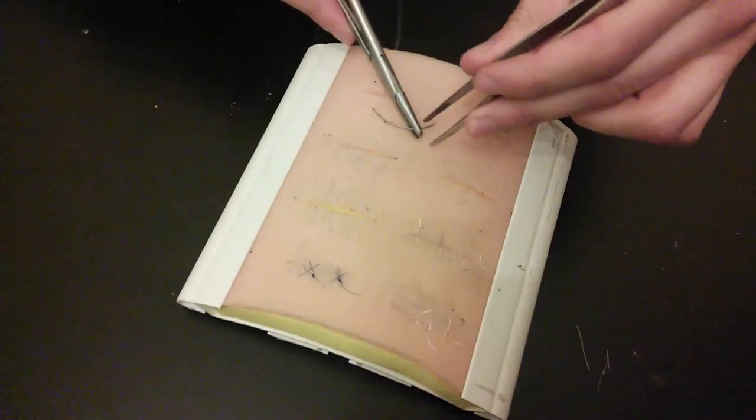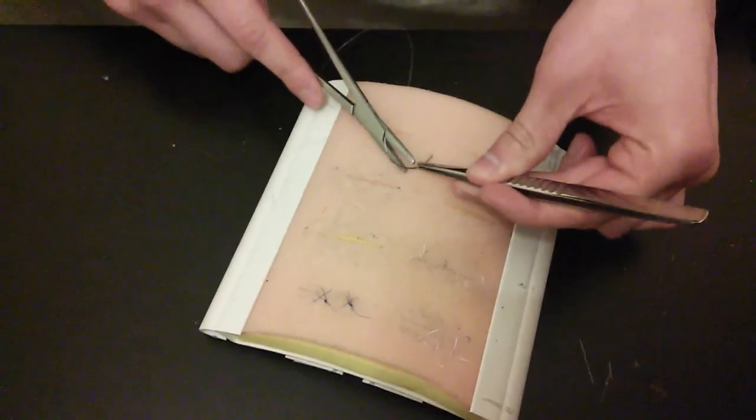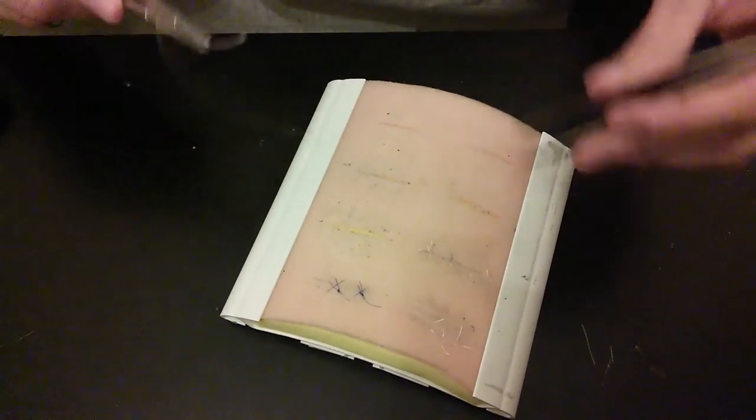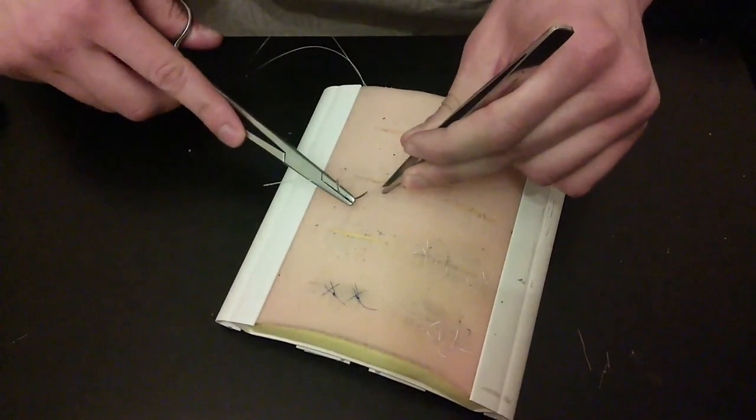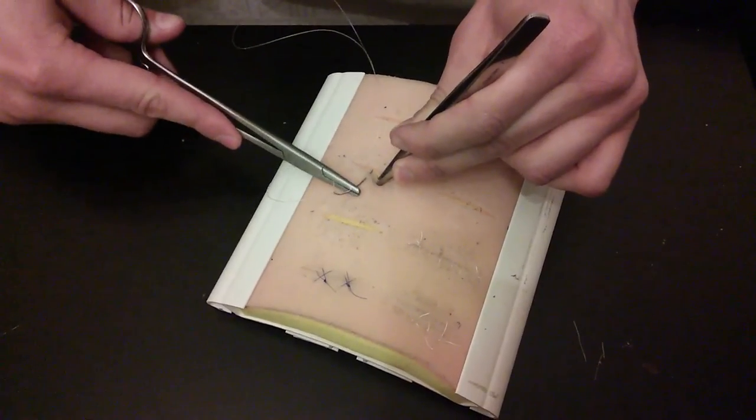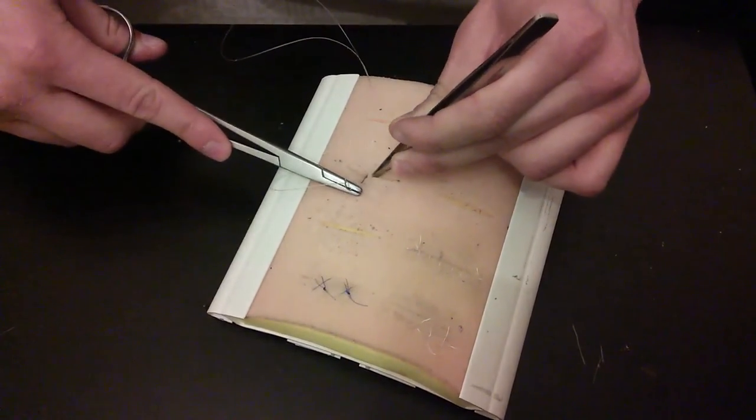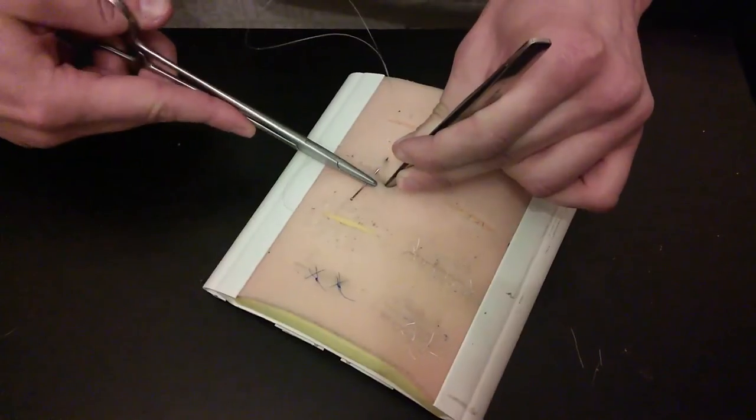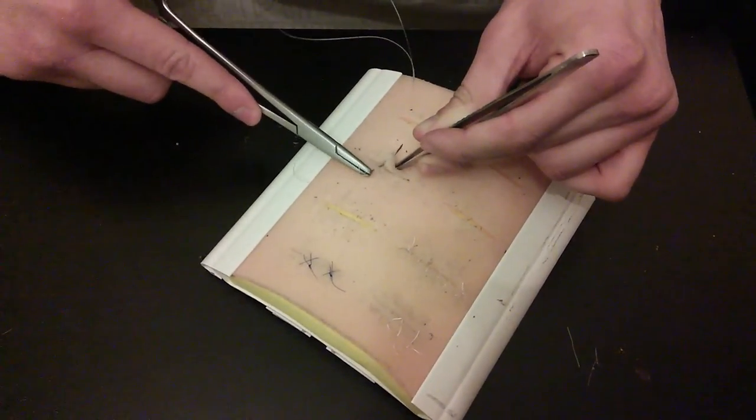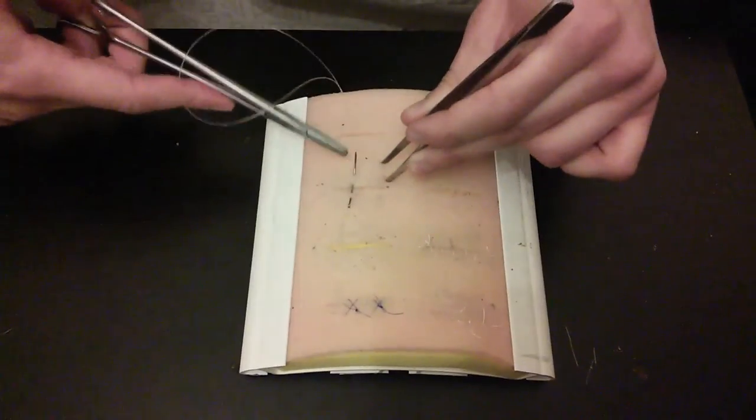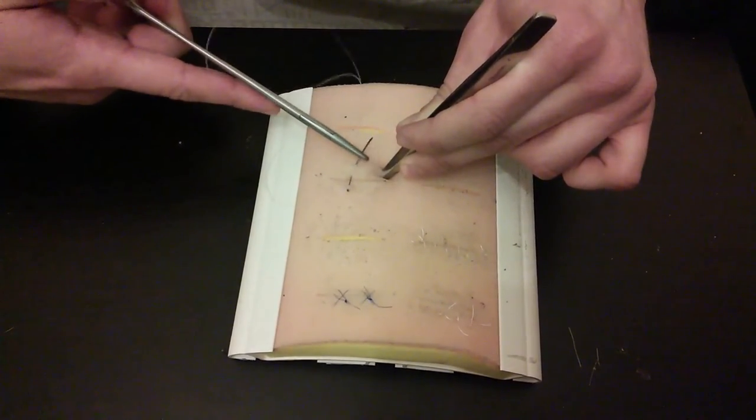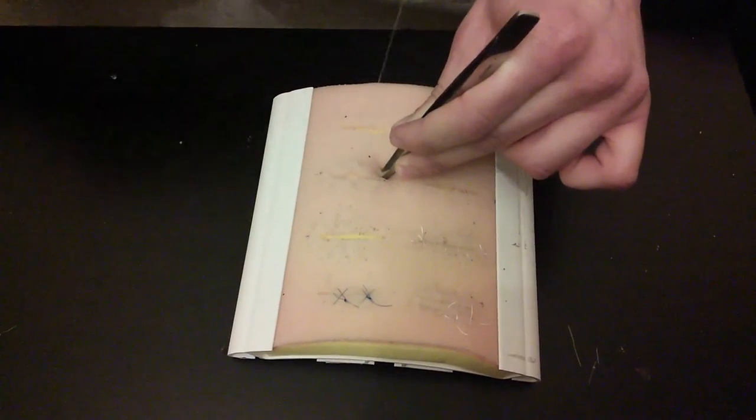We are going to adjust the needle. Remember never touch the sharp end. Cross over, go about 5-8mm down, go through again, and come through.